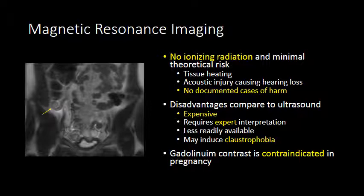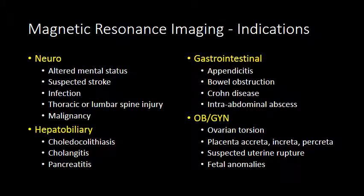Gadolinium contrast, a type of IV contrast used for MRI, is contraindicated in pregnancy. Magnetic resonance imaging is a very robust tool that can image almost any part of the body with high sensitivity and specificity. So if ultrasound isn't going to answer your clinical question and you need diagnostic imaging in a pregnant woman, MRI is often an excellent modality for determining what's going on in your patient.